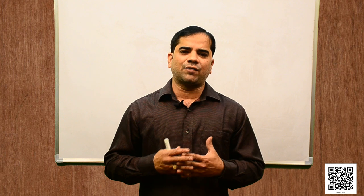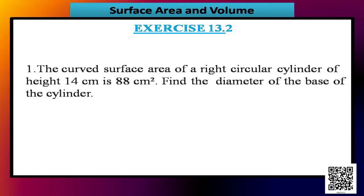Let us now discuss exercise 13.2. For this exercise, assume π = 22/7 unless stated otherwise — if the value of π is given as 3.14 in some cases, take it as 3.14. Question 1 says: The curved surface area of a right circular cylinder of height 14 cm is 88 cm². Find the diameter of the base of the cylinder.